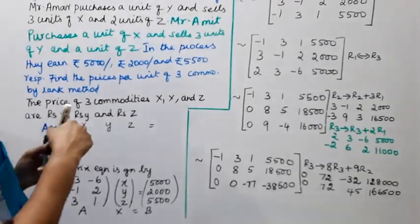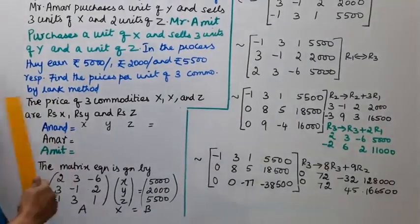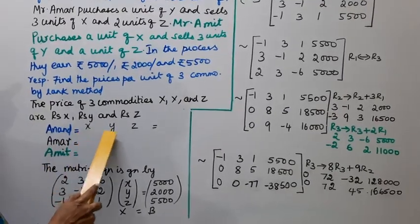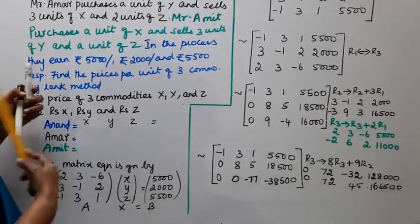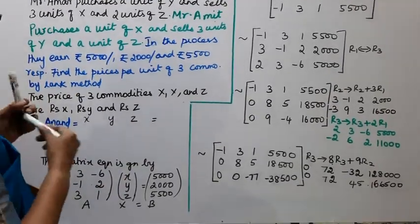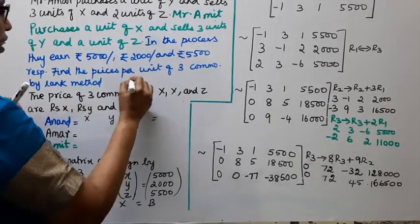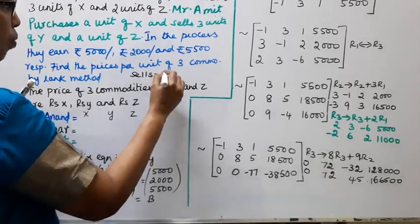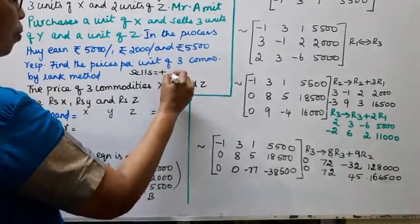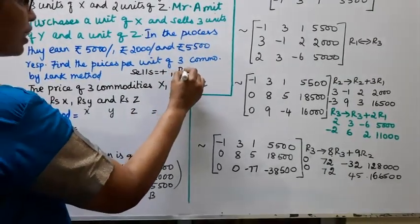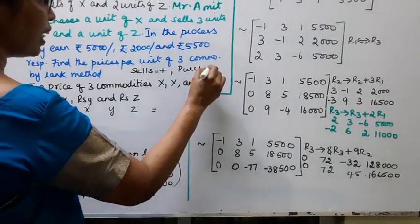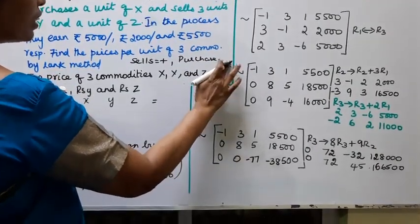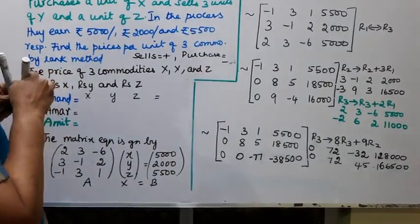Sales minus purchases equals profit. Sales is taken as positive and purchases as negative. That is, sales minus purchases gives the net earnings for each person.